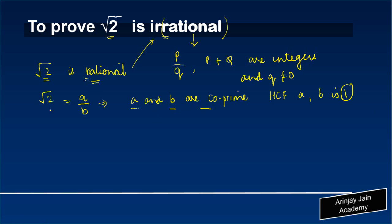Now, if I square both these sides, we will get 2 is equal to A square upon B square. Cross-multiplying, you will get 2B square is equal to A square.